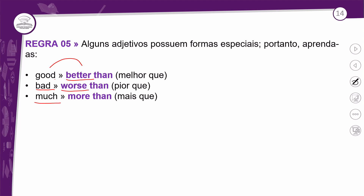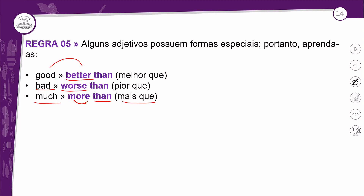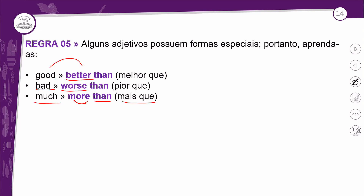MUCH (muito) → MORE THAN (mais que). O MUCH é o adjetivo que deu origem à palavra MORE na questão da superioridade. Então vem primeiro MUCH, para depois vir MORE. Sabendo dessas regrinhas que vimos, são regras que vão pegar mais a escrita. Tirando a regra de número 5, que você vai precisar saber de qualquer forma que uma palavra vai para outra.